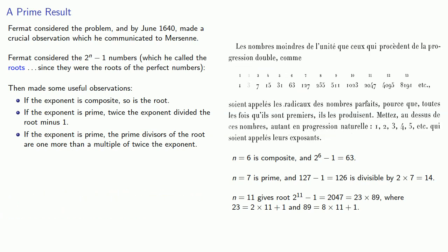The importance of these observations is twofold. First, it tells us that we shouldn't even bother with exponents that are composite, because the root will be guaranteed composite. And second, if 2^n - 1 is composite, the last of Fermat's observations gives us a list of what the prime factors might be.